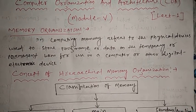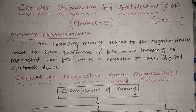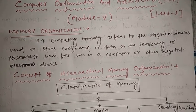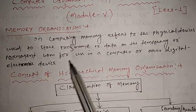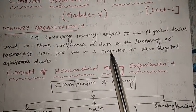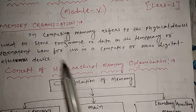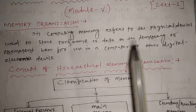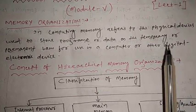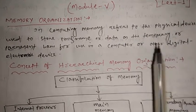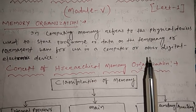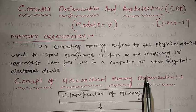Whatever data, instruction, or information you want to store in your computer, we can store it with the help of memory. In computing, memory refers to a physical device used to store programs or data on a temporary or permanent basis. Temporary or permanent basis means you can store information as long as you want — that is called permanent. But temporary means the data will be erased when the power supply is turned off.